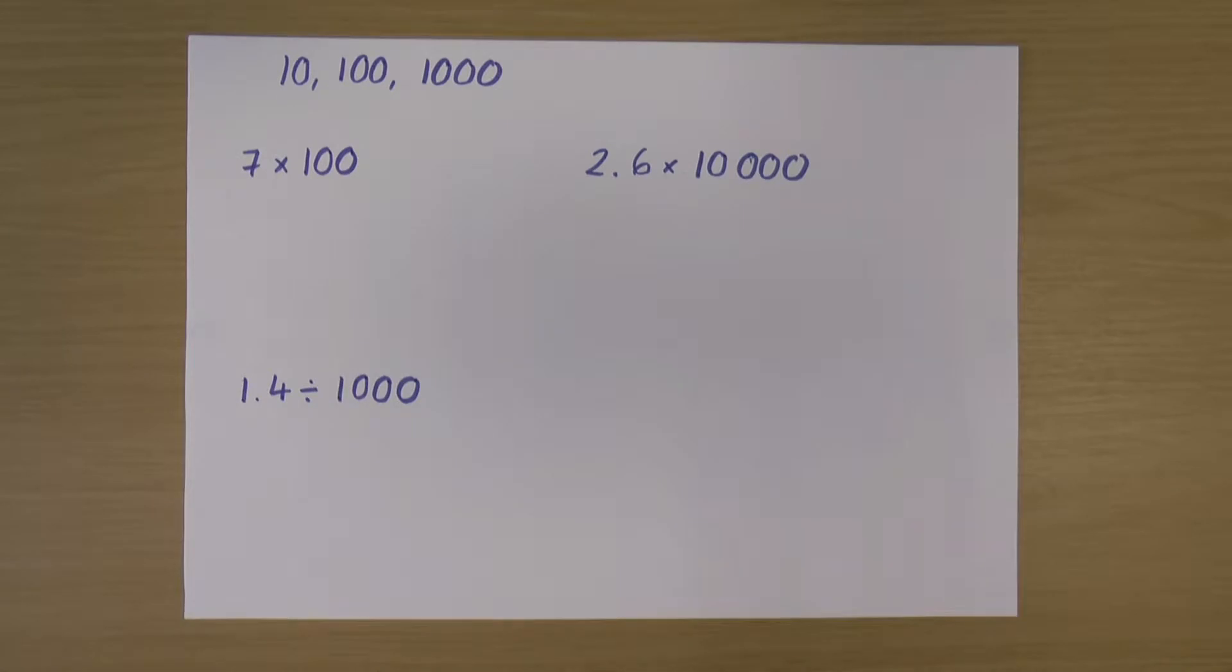Hi, this is Rachel, and we're going to look at multiplying and dividing by multiples of 10. So by multiples of 10, I mean 10, 100, 1000, 10,000, a million, anything that has a 1 and some 0s, basically.